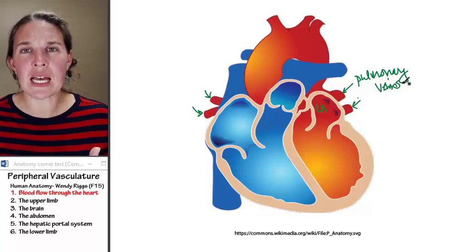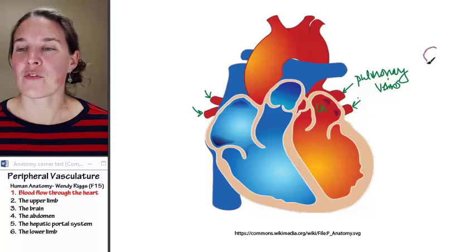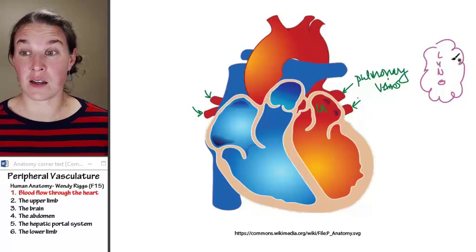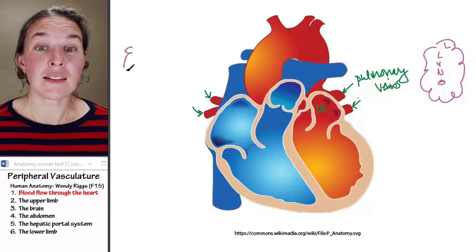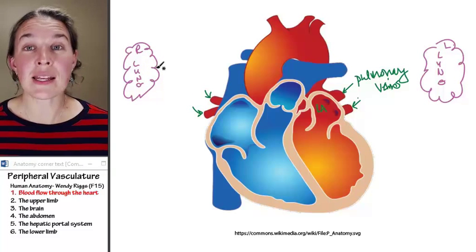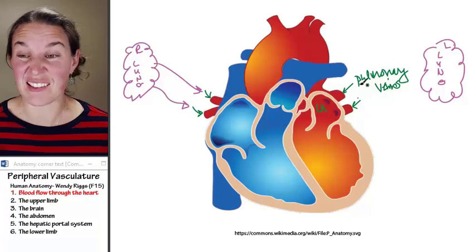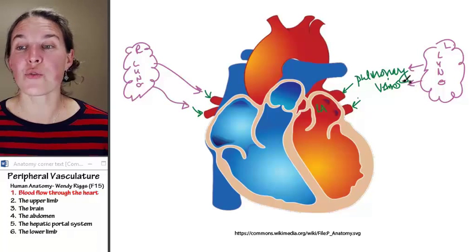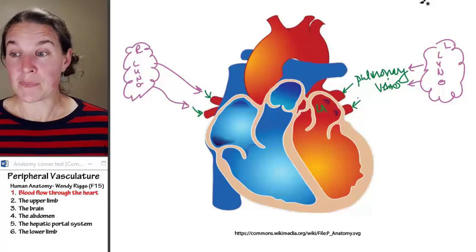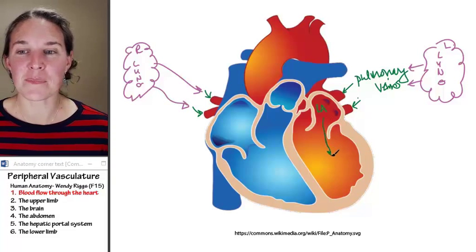The pulmonary veins are bringing blood — fresh, oxygenated, yummy blood — from the lungs. This is the left lung and this is the right lung, and the right and left lungs deliver that blood. That's actually a capillary bed in the lungs, and the blood comes back to the heart through the pulmonary veins. Once the blood is in the left atrium, it passes through my left AV valve into the left ventricle.